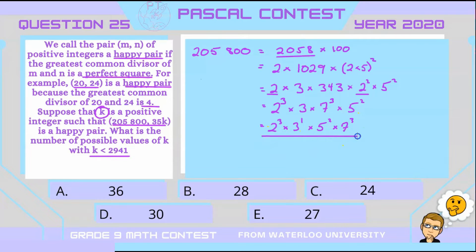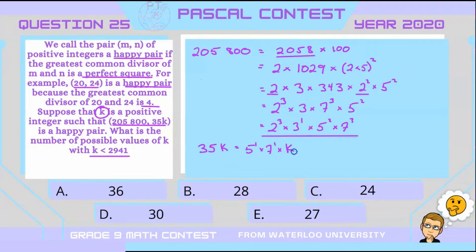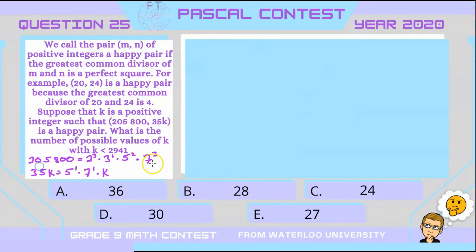Those are all prime numbers. Now we can do the same thing with 35k. 35 is just 5 times 7, so that's 5 to the one times 7 to the one times k. That's the best prime factorization we can do without knowing what k actually is. Let me write these prime factorizations to the side and we'll use them later.